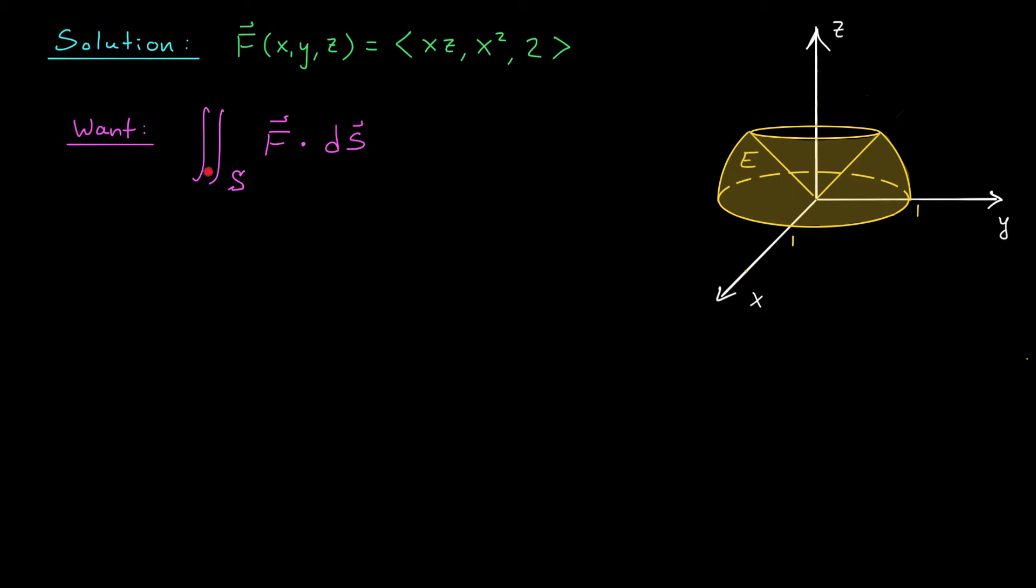Remember, Stokes' theorem says that the surface integral of the curl of a vector field is equal to the line integral of that vector field along the boundary of the surface. So if we wanted to convert this surface integral into a line integral, we would have to think of this vector field f as the curl of some other vector field. But can you think of a vector field g that has this guy as its curl? I don't think that's so obvious.